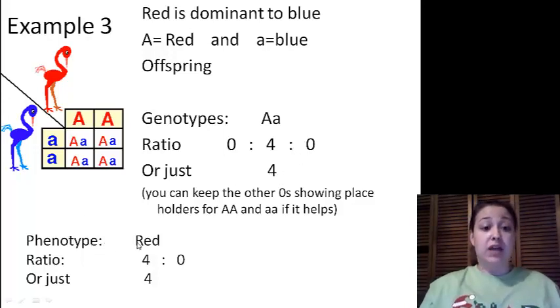And our phenotypes, again, this one's got a dominant A, so it's going to be red, dominant A red, red, red. So our ratio would be four to zero, or you can leave off the zero and just make it four. Again, it's just counting.